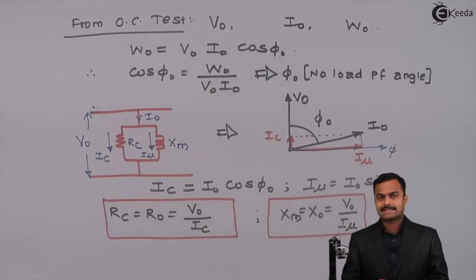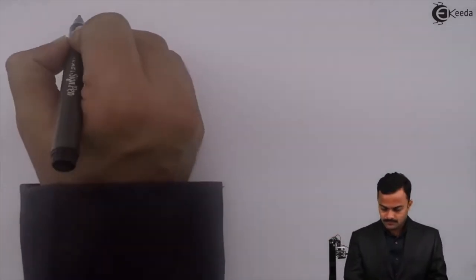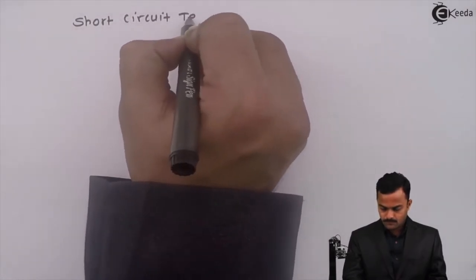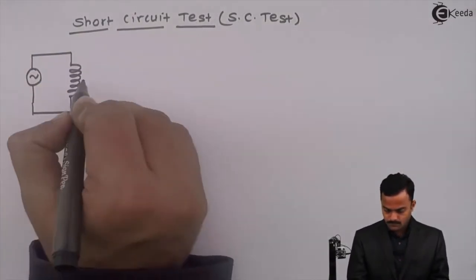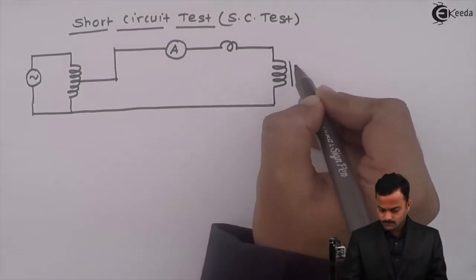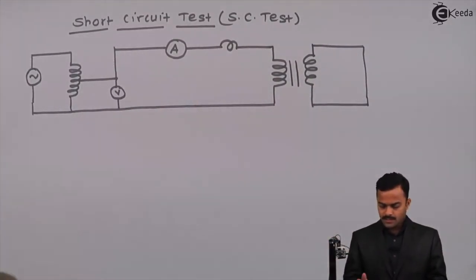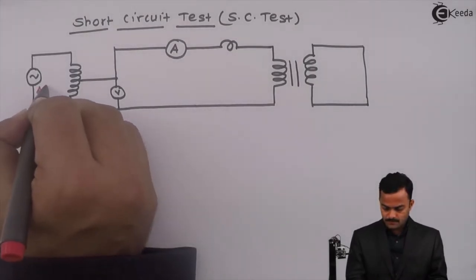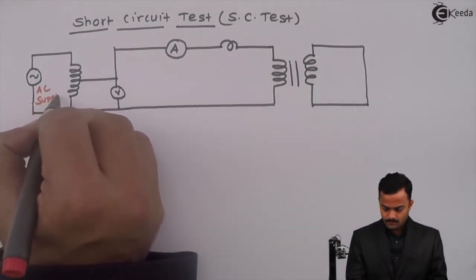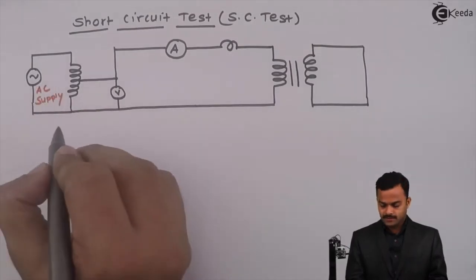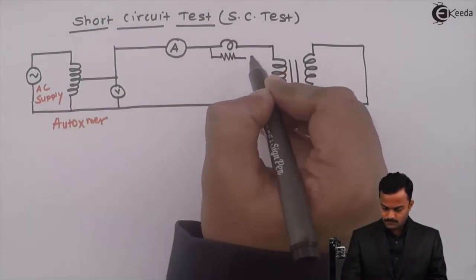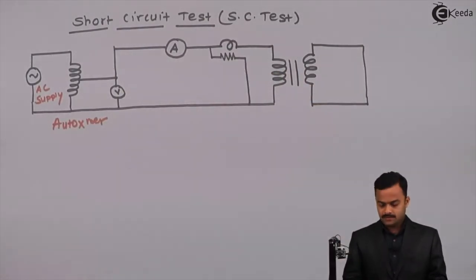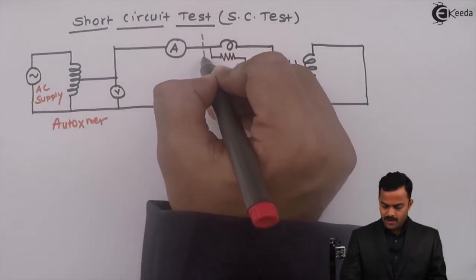Let us go to the second test, which is the short circuit test. I will first draw the setup. Here we have an AC supply. For controlling it we have an auto transformer, an ammeter, and a wattmeter.